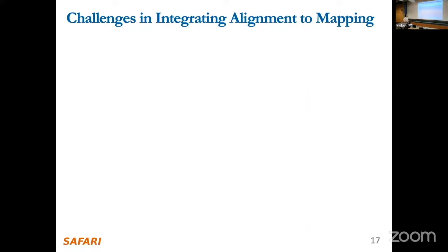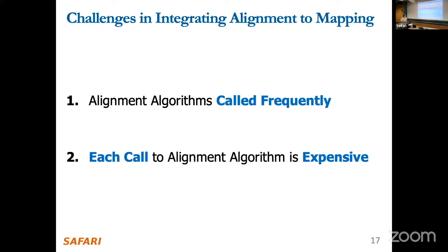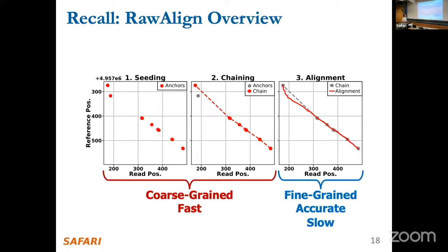Alignment is costly, and the alignment algorithm is also called very frequently. For the human reference genome with three billion characters, you could have a candidate at any of those positions. Seeding and chaining filter out many candidates, but you still have very many to evaluate. If you have an expensive alignment algorithm and call it frequently, you have a performance bottleneck. Our initial version integrated into RawHash was terribly slow — it took a few days to run a simple experiment that RawHash ran in one hour.